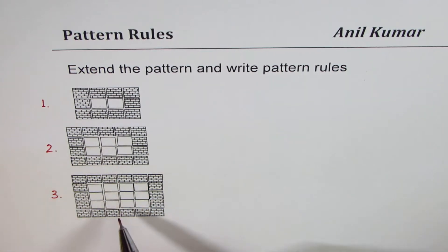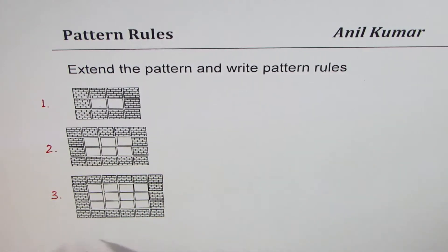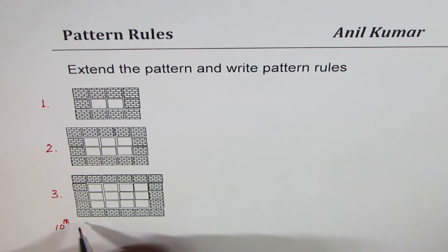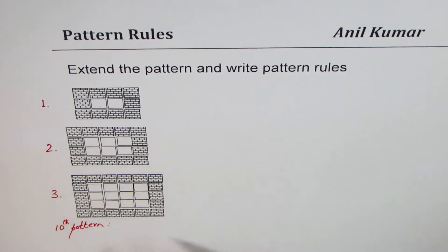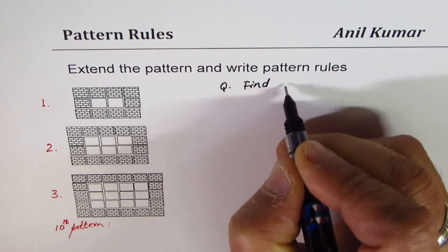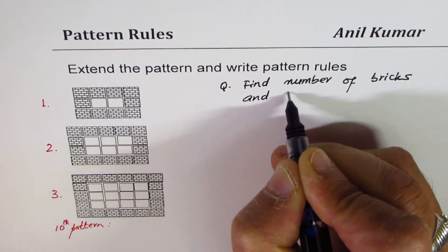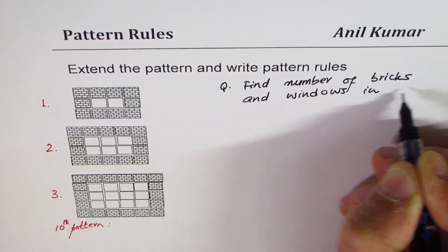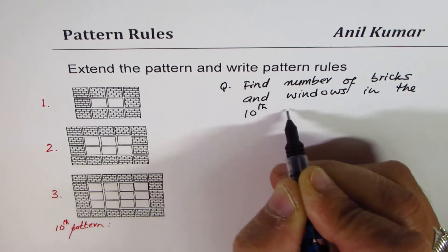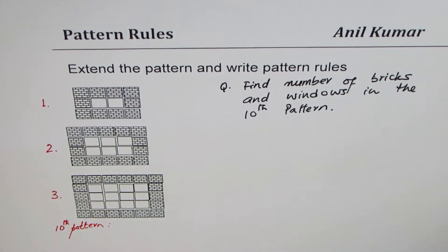The number of bricks and windows is increasing as you can see — there is a pattern. You need to find the pattern in which the number of bricks are increasing and the number of windows are increasing, and then you have to tell me: on the tenth pattern, how many bricks and how many windows are there? Find the number of bricks and windows in the tenth pattern. You can always pause the video, answer the question, and then look into my suggestions.